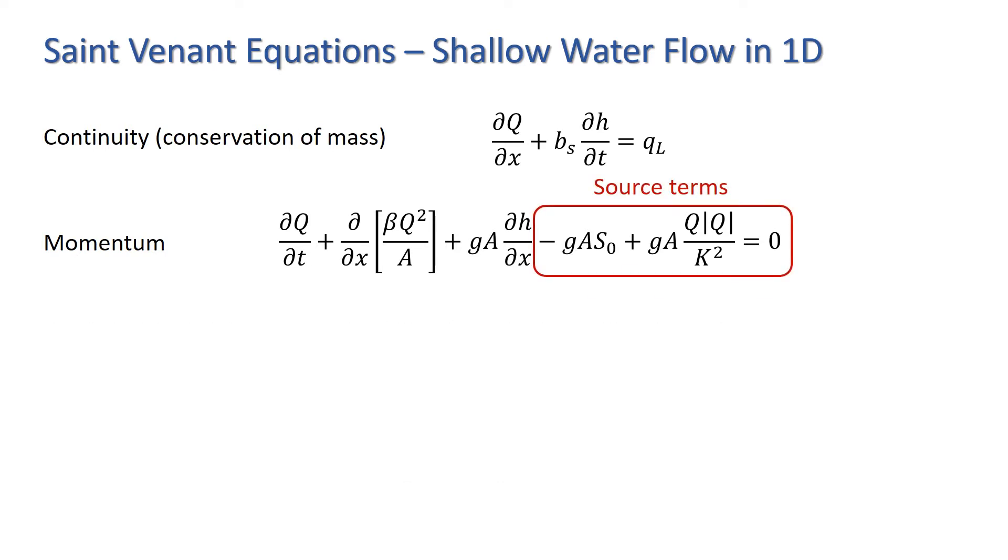When the source terms, i.e. the bed slope and friction terms, are much larger than the first three terms in the momentum equation, we can ignore the smaller terms and make what is known as a kinematic wave approximation.